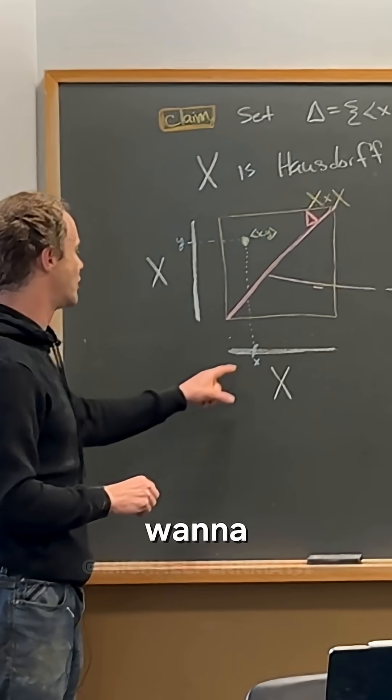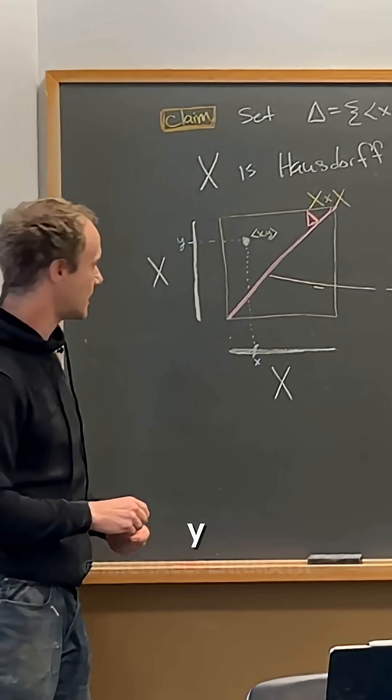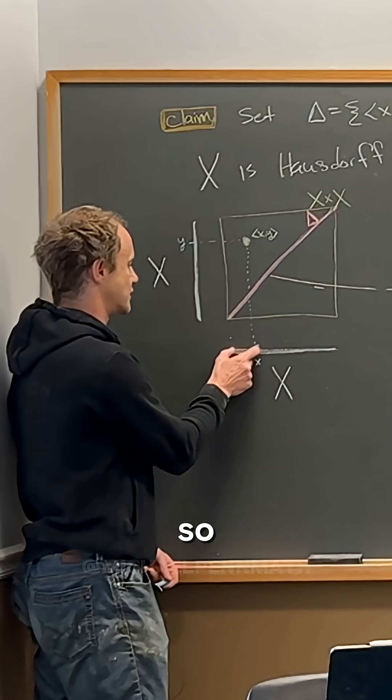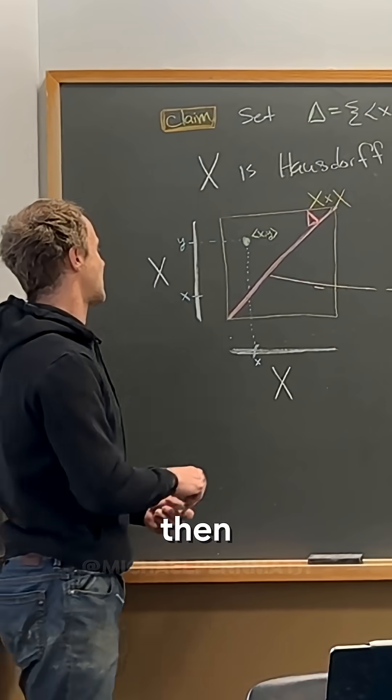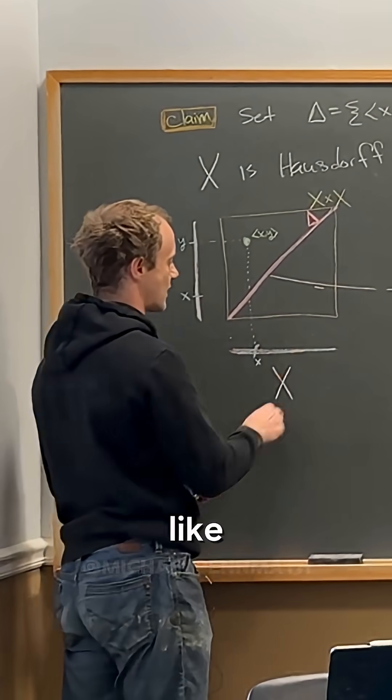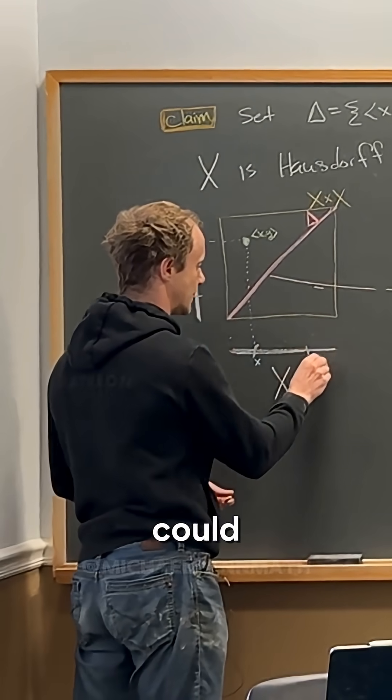And now what I want to do is put a copy of x and y on each axis. So now notice a copy of x goes right here also. And then a copy of y goes right here. We could agree to that, right.